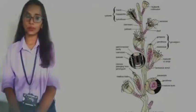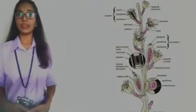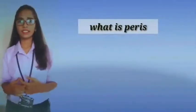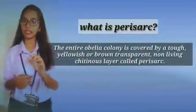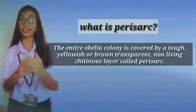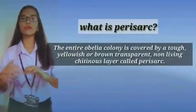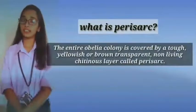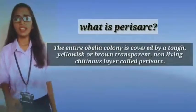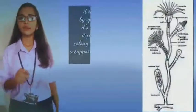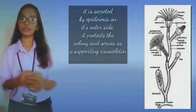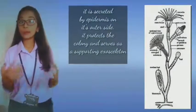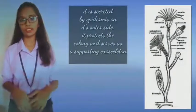Let us go into our topic Perisarch. What is Perisarch? The entire Obelia colony is covered by a tough, yellowish or brown transparent non-living chitinous layer called Perisarch. It is secreted by the epidermis on its outer side. It protects the colony and serves as a supporting exoskeleton.